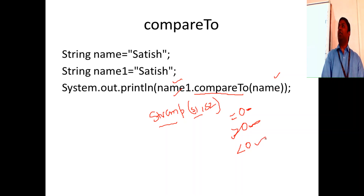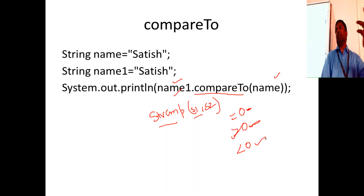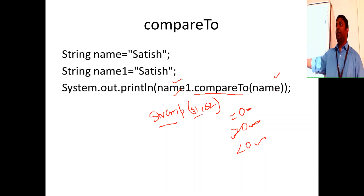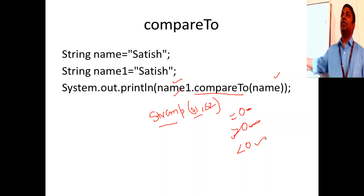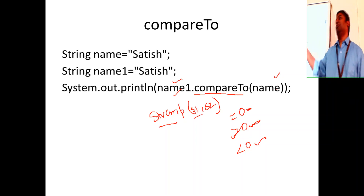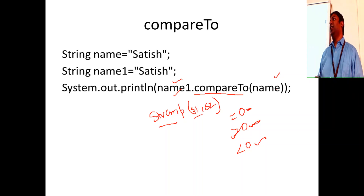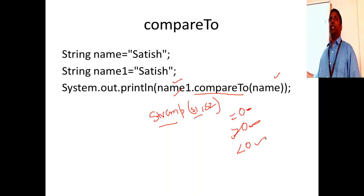String comparison using `compareTo()` works character by character, comparing the encoded Unicode values of each character. For example, a lowercase 's' has a greater value than an uppercase 'S'. Java uses Unicode format, not ASCII.